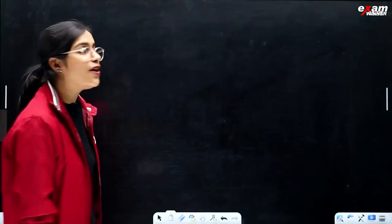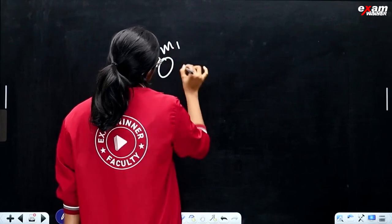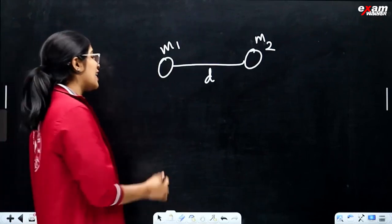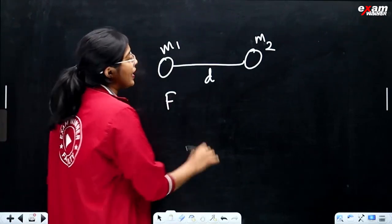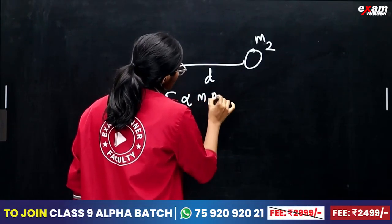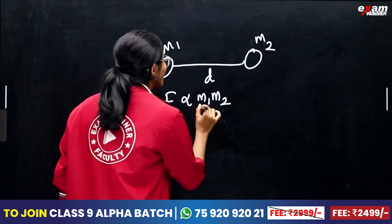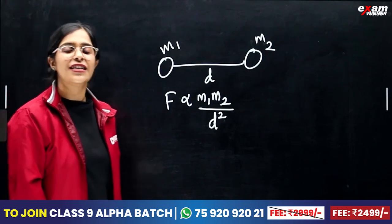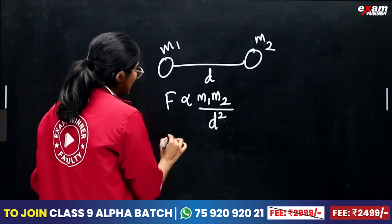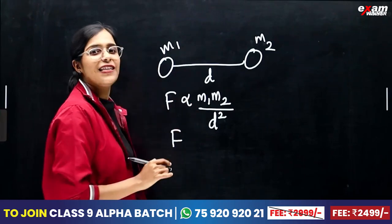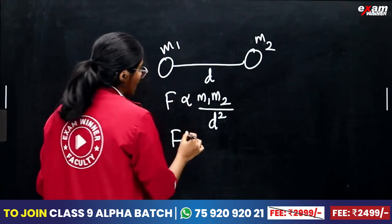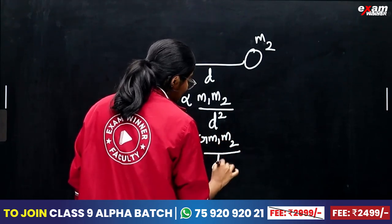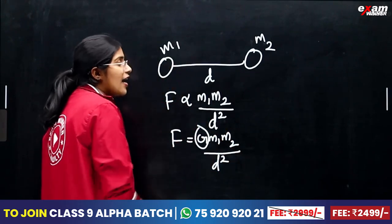We are learning the Universal Law of Gravitation. The force of attraction is proportional to the product of the masses, and inversely proportional to the square of the distance between them. We replace the proportionality sign with the gravitational constant G, giving us F equals G M1 M2 divided by D squared.